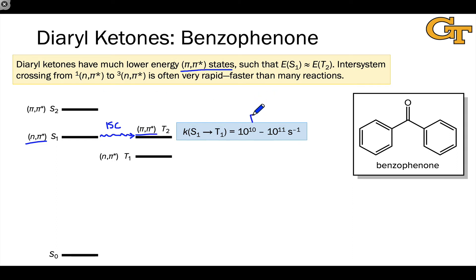And again, the number's not that important. The important thing to note here is this is at least 1,000 times as fast as intersystem crossing in the dialkyl ketones. And this is getting faster than even the fastest photochemical reactions.